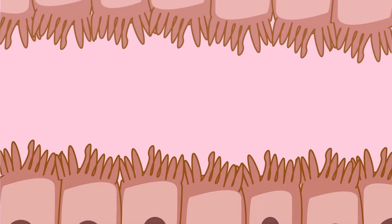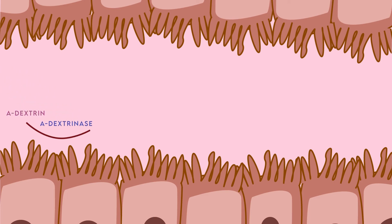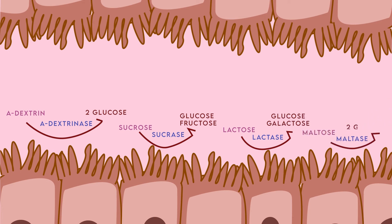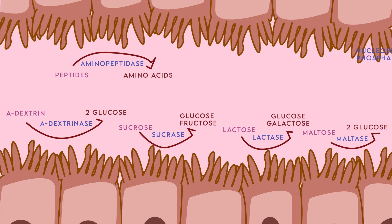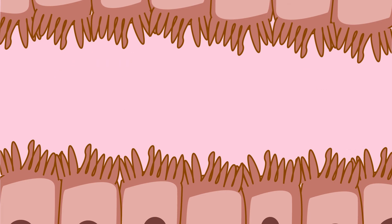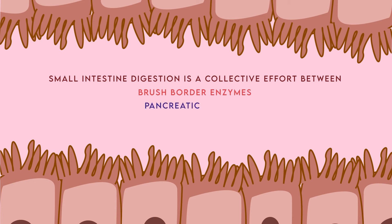This is where intestinal brush border enzymes come in. Brush border enzymes, permanently embedded within the mucosal layer of the small intestine, include alpha-dextrinase, which digests alpha-dextrins into two molecules of glucose; sucrase, to digest sucrose into glucose and fructose; lactase, to digest lactose into glucose and galactose; maltase, to digest maltose into two molecules of glucose; aminopeptidase, to digest any remaining peptides into amino acids; and nucleosidases together with phosphatases to digest nucleotides into their nitrogenous bases, sugars, and phosphates. The final digestive processes occurring in the small intestine are primarily through a collective effort of intestinal brush border enzymes, pancreatic enzymes, and bile.